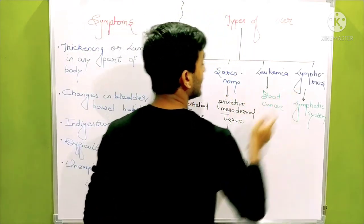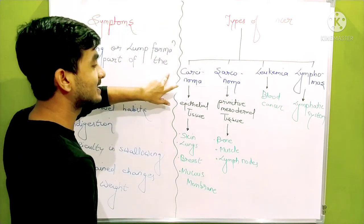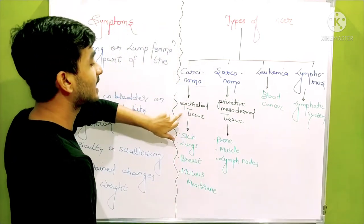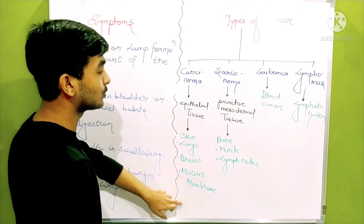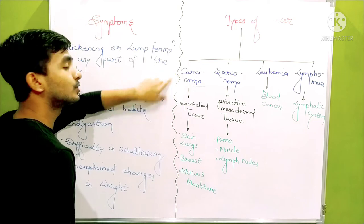Carcinoma, sarcoma, leukemia and lymphoma. Carcinoma are cancer of epithelial tissue - epithelial tissue originating organs like skin, lungs, breast, mucus. Generally carcinoma includes skin cancer.